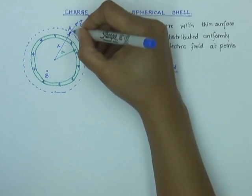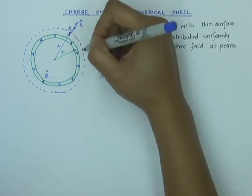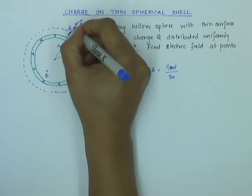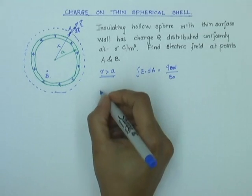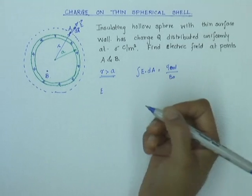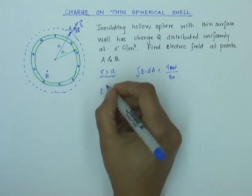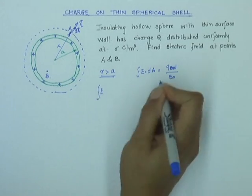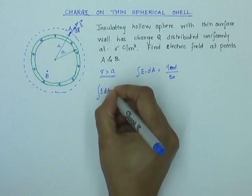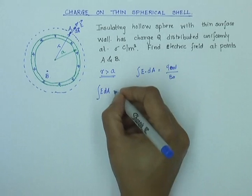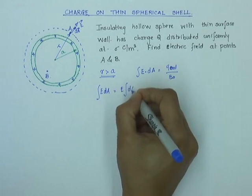Then dA of a sphere at each point is again going to be radial. So E and dA are parallel to each other. My Gauss's law can be simplified to E is uniform constant. Let me write E dot dA, theta is zero, so E dot dA becomes E dA. Since E is constant, I bring it out of my integral.